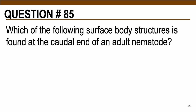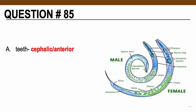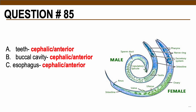Question number 85: Which surface body structure is found at the caudal end of an adult nematode? Keywords: caudal means posterior or at the end. Choices are A — teeth, B — buccal cavity, C — esophagus, D — copulatory bursa. The correct answer is letter D, copulatory bursa. The other choices — teeth, buccal cavity, and esophagus — are all located anteriorly or at the cephalic end. The copulatory bursa is present in male adult worms at the posterior or caudal end.